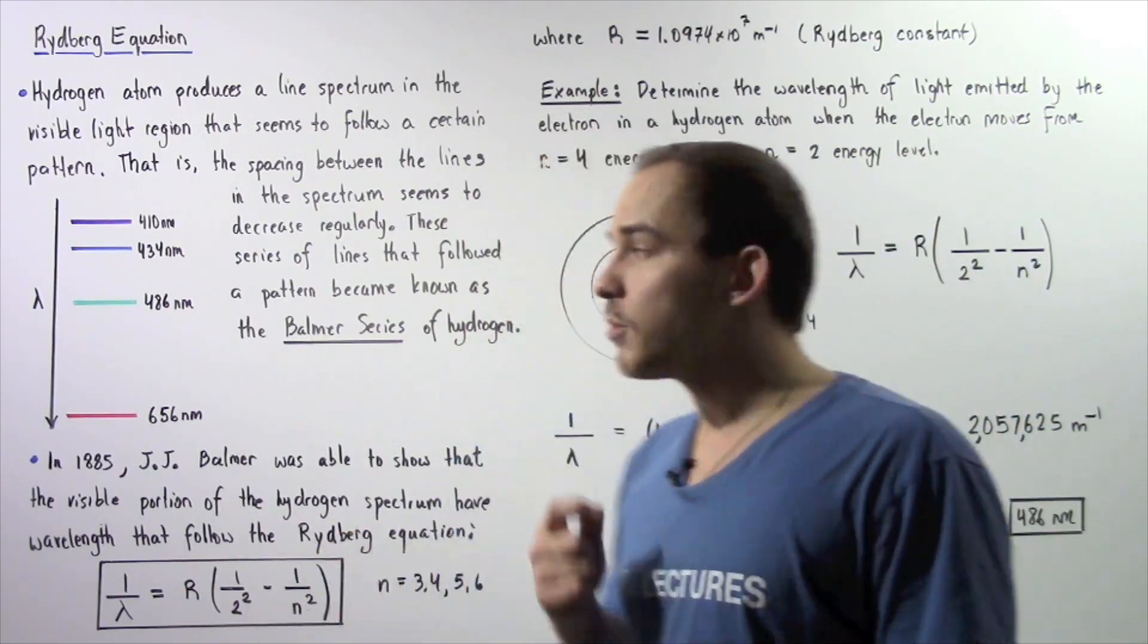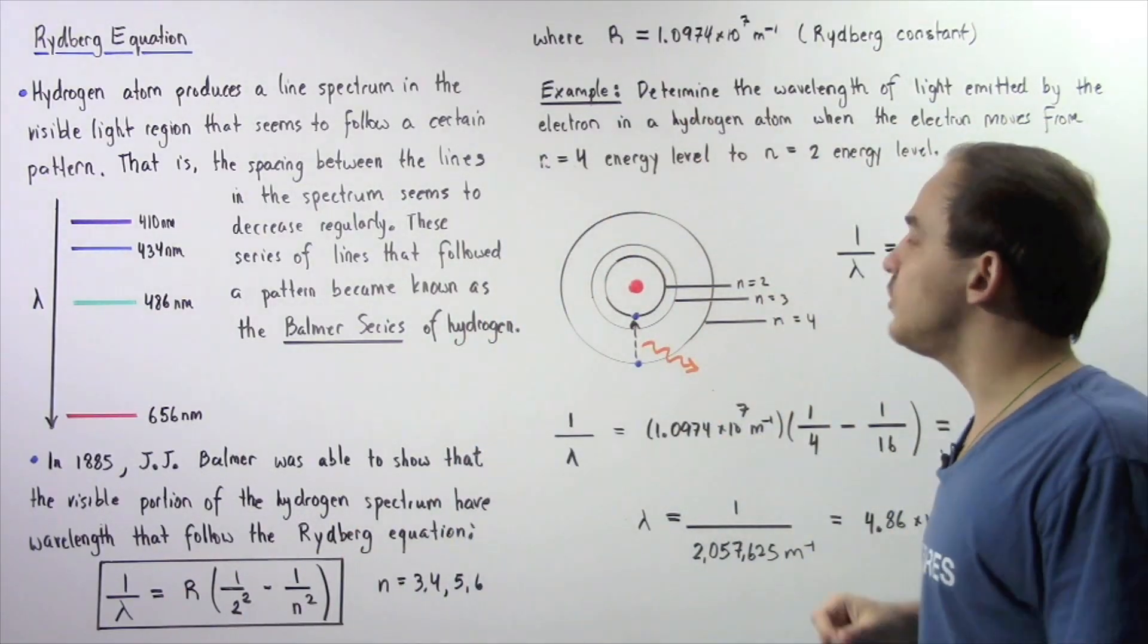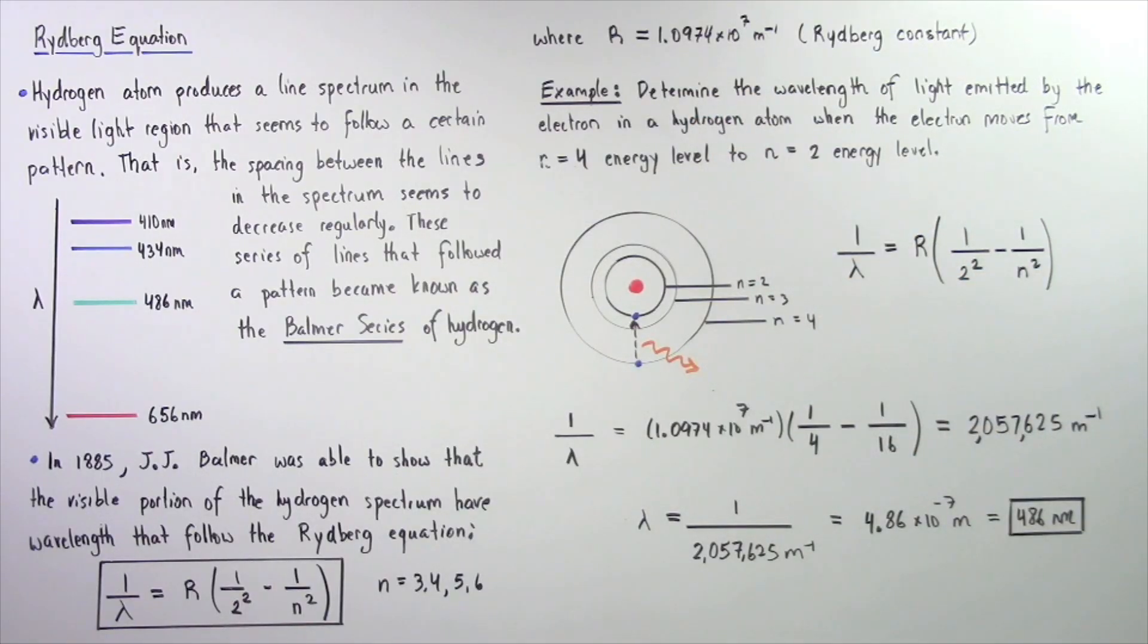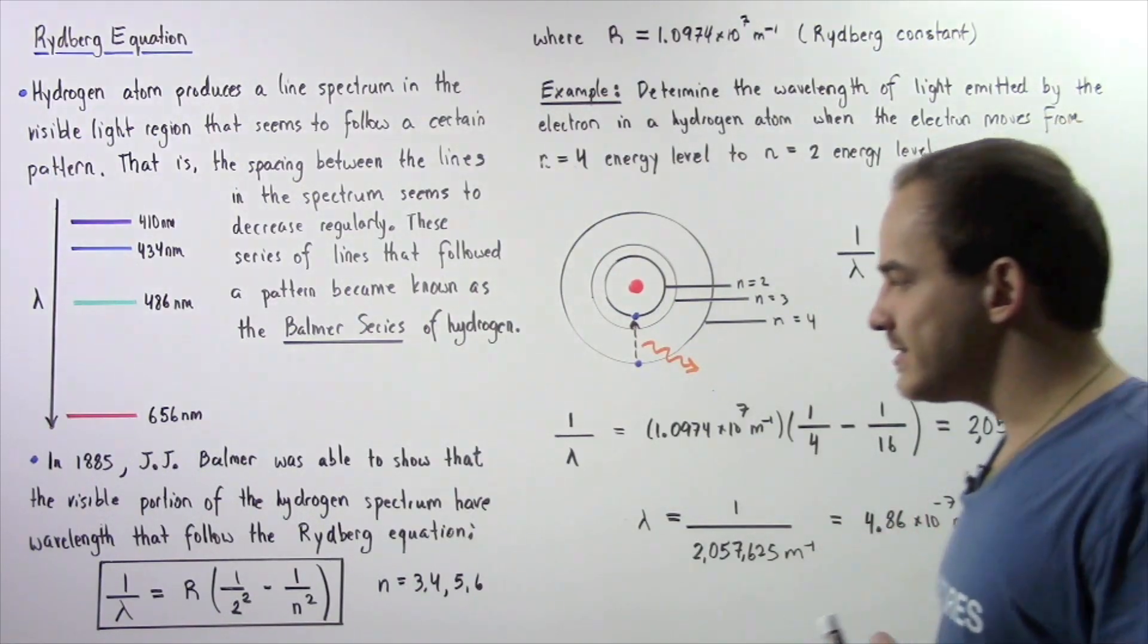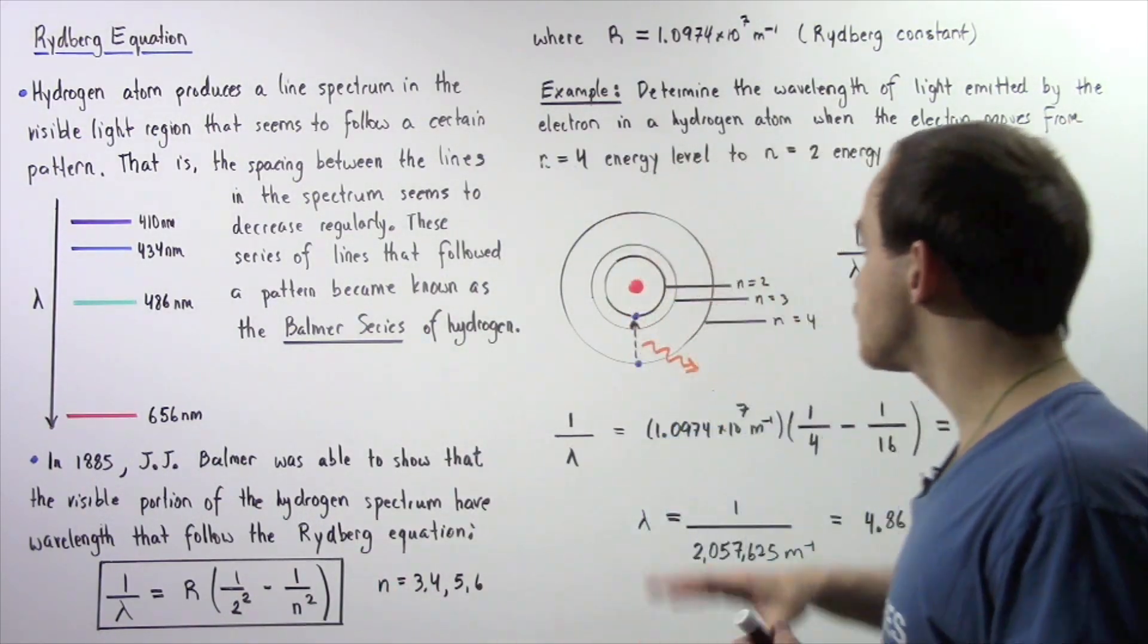So once again, R is the Rydberg constant that has a value of 1.0974 times 10 to the 7 meters to the negative 1. So to actually see how this equation works,